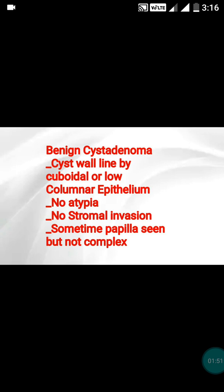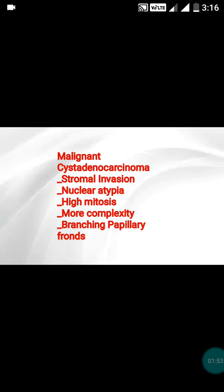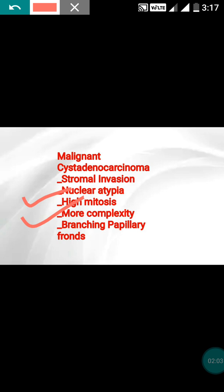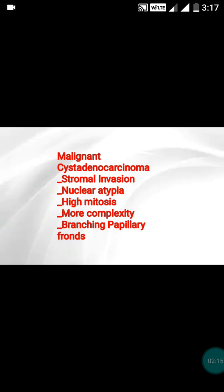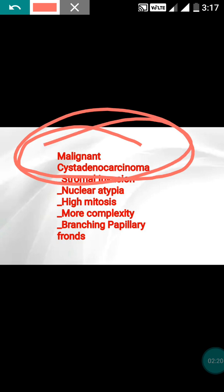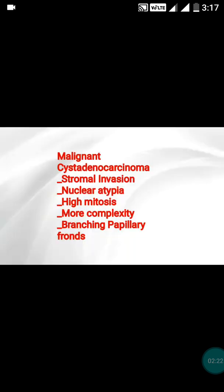Exactly the opposite: if you can see features of malignancy — pleomorphism, nuclear atypia, high mitosis, more complexity of the papillae, branching papillary fronts — and obviously if stromal invasion is seen, then such a tumor is given the name malignant cystadenocarcinoma of the ovary.